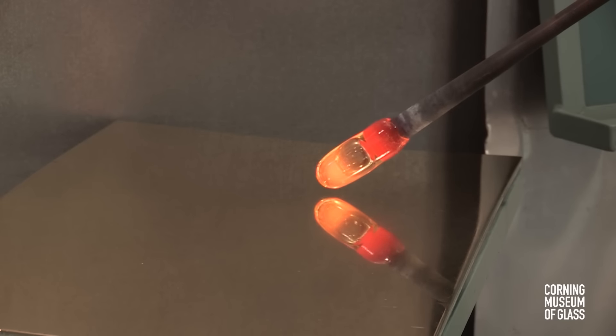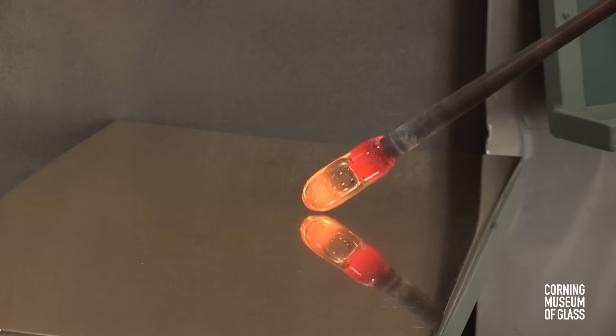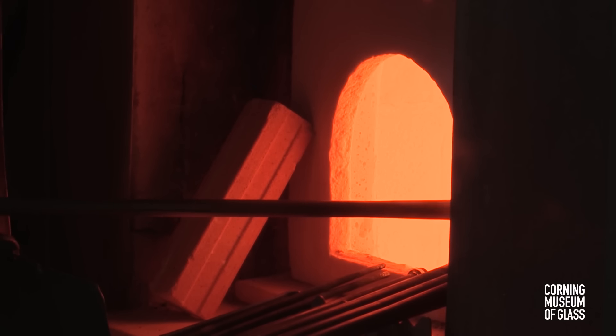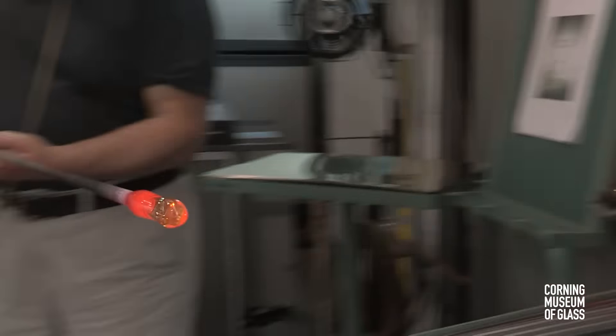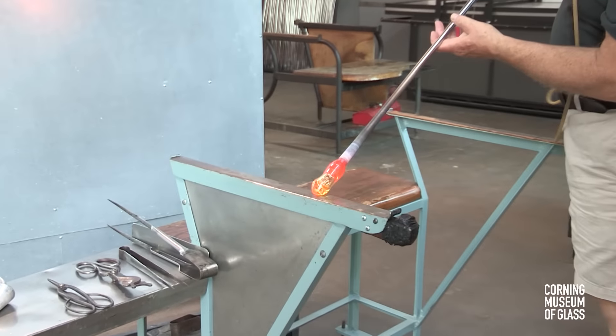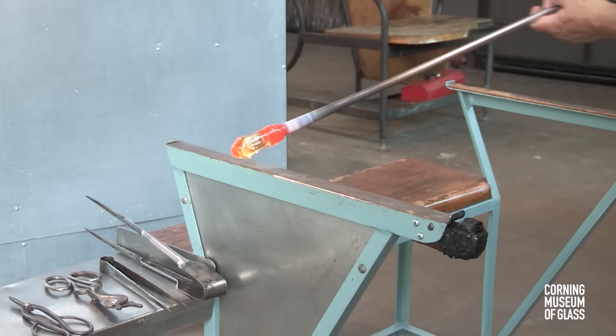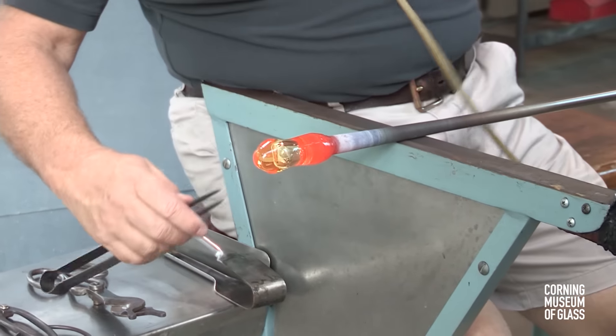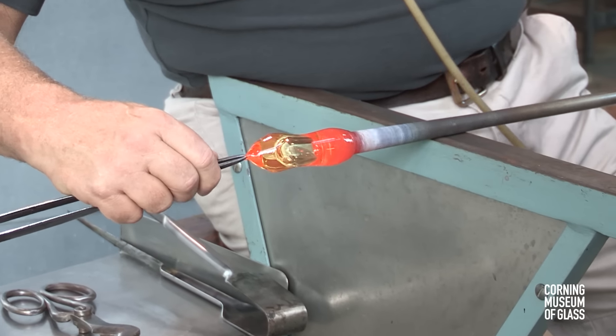The tip is rolled on the marver to make it pointed and to cool the tip of the gather. The tip is further cooled, and the blowing and shaping begins to create the nascent form of the cup.